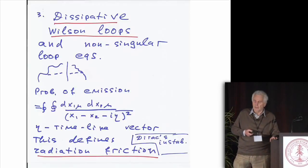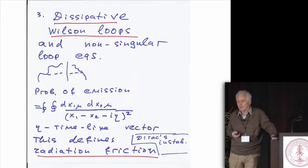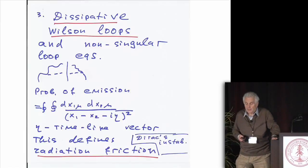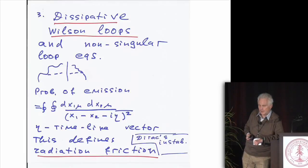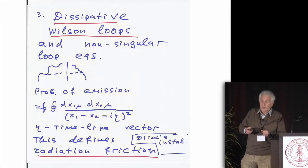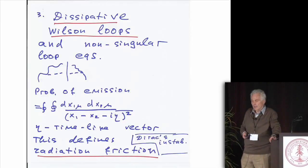The usual Wilson loop is actually, which measures the energy of the static particle, the interaction of the static particle, is not a very good, it's a complicated object. So there is an interesting object which is related to the Wilson loop, which measures not the energy but the radiation friction.